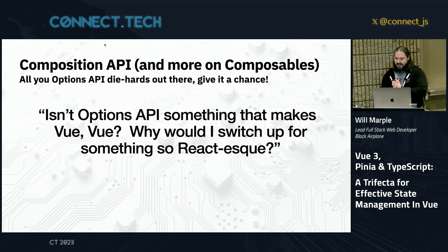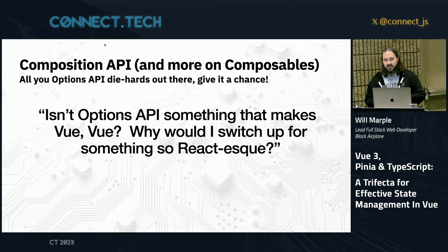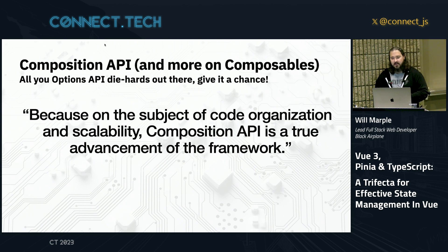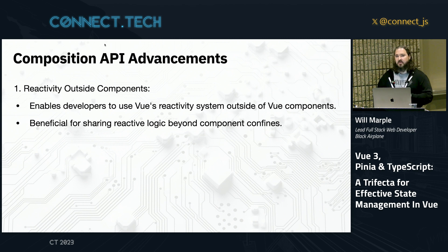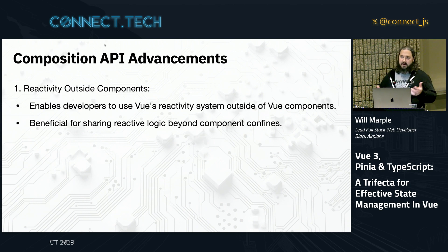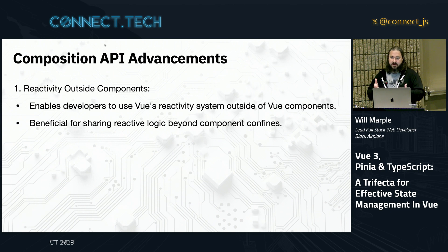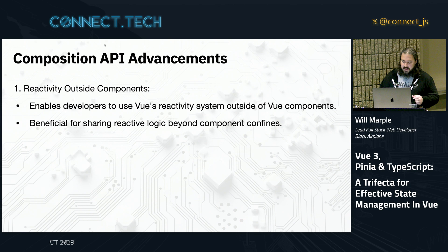For anybody who's dyed-in-the-wool Options API: isn't Options API what makes Vue feel like Vue? Why switch to something more React-esque? On the subject of code organization and scalability, this is something React got right with custom hooks. I think Composition API is a genuine advancement in the framework. Some cool things you can do: reactivity outside of components. It's a feature where you could have a Vue app leveraging reactivity from the framework as well as something outside the Vue app that also reacts to the same state with Composition API — which is pretty cool.